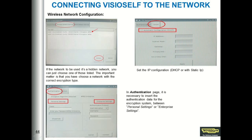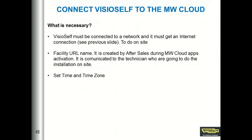Also for the wireless network, I can select whether the IP addresses are assigned automatically by a device or if I have to insert a manual IP address. To summarize, what we have to do with VisioSelf to connect to MyWellnessCloud is: first, it must be connected to a network; second, we have to enter the facility URL — a name that identifies the facility in the world and tells the device to which facility it is currently connected. This facility URL is decided during the creation of the facility.